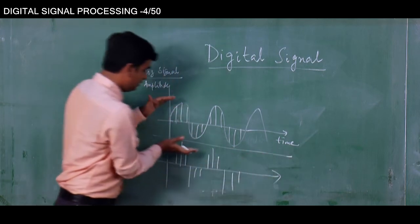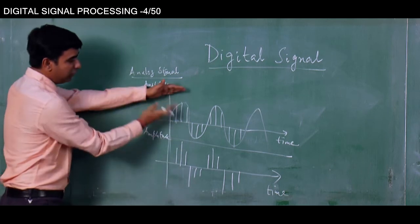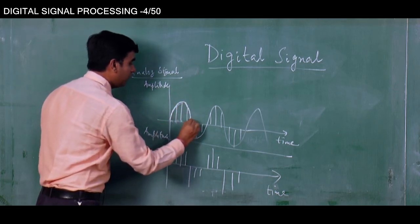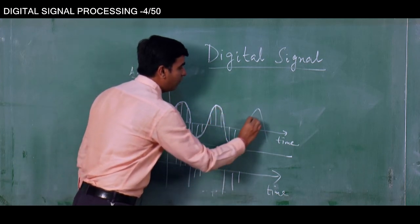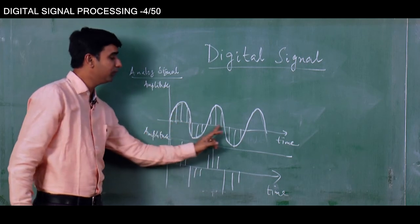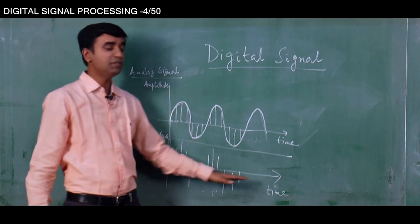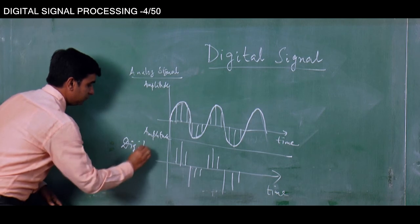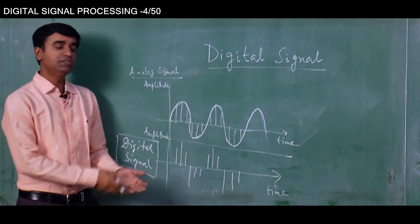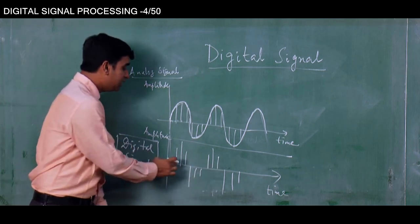This part is the digital signal — this is also the time axis and this is the amplitude. From these two you can clearly understand what is an analog signal and what is a digital signal. The continuous part, where at each and every point of time it has got some value, is an analog signal. When I am taking samples at discrete points of time, that is a digital signal — a discrete time, discrete value signal, existing at discrete instances of time, not at each and every point of time.